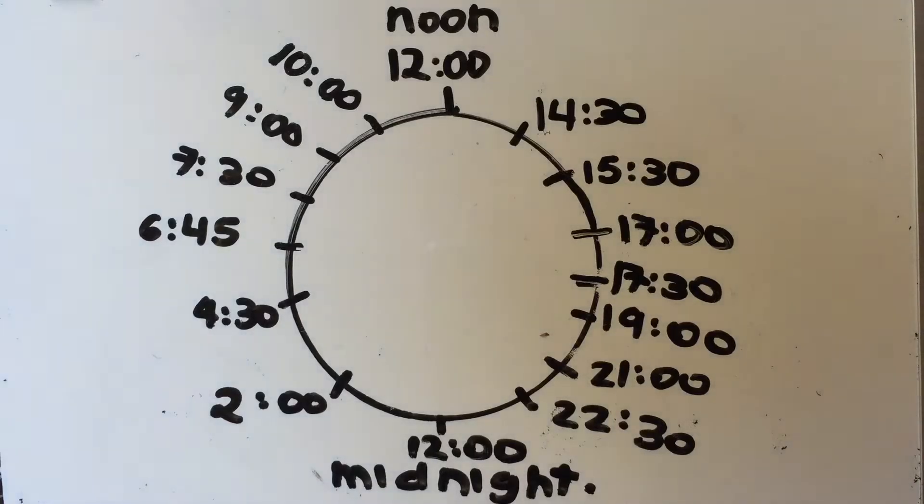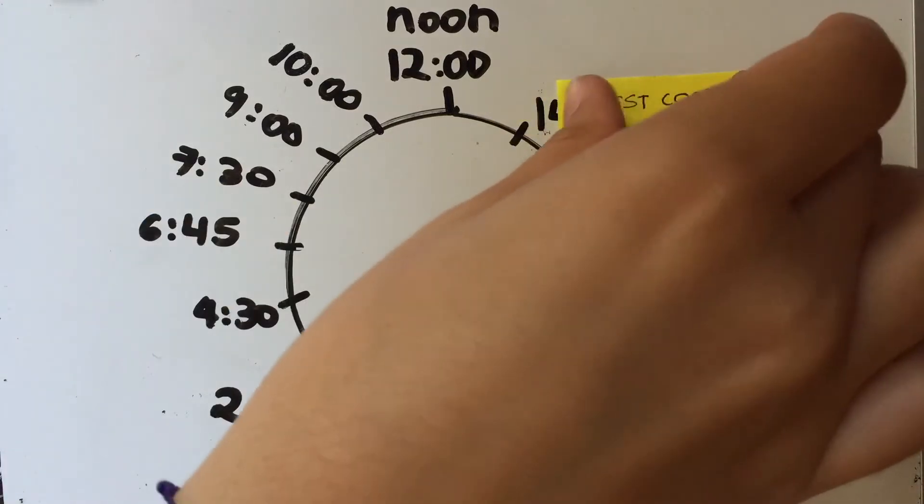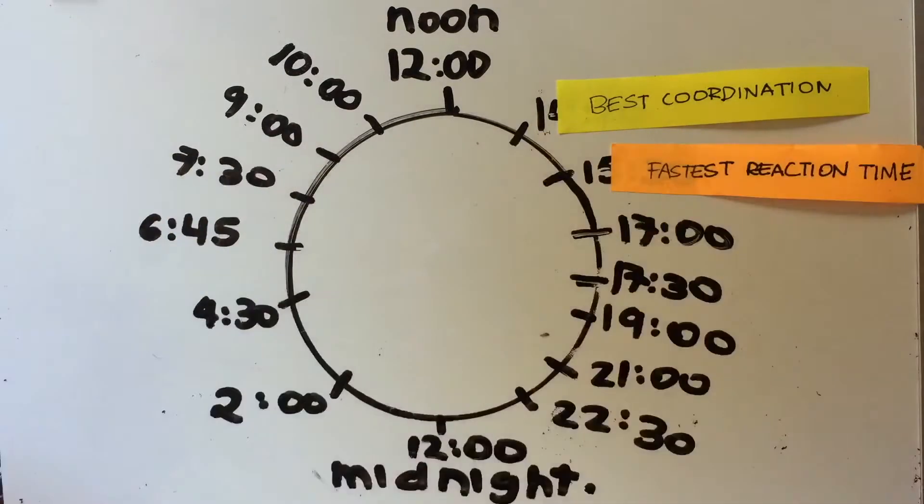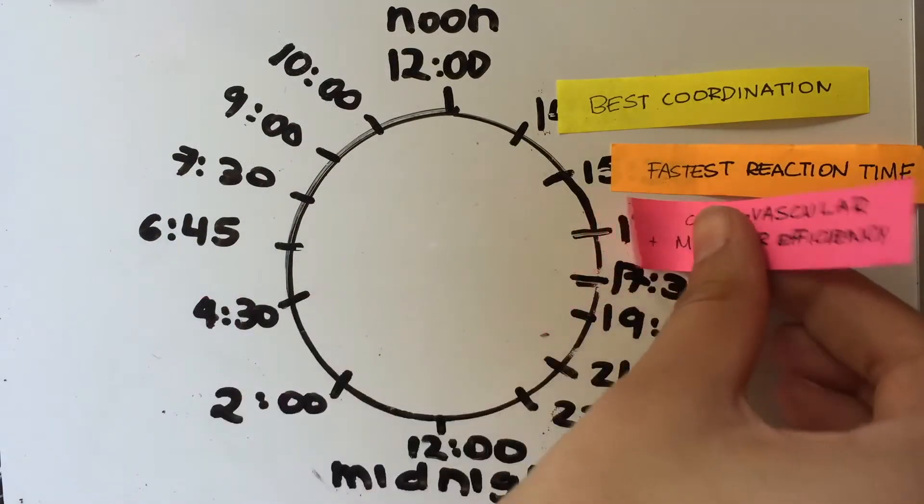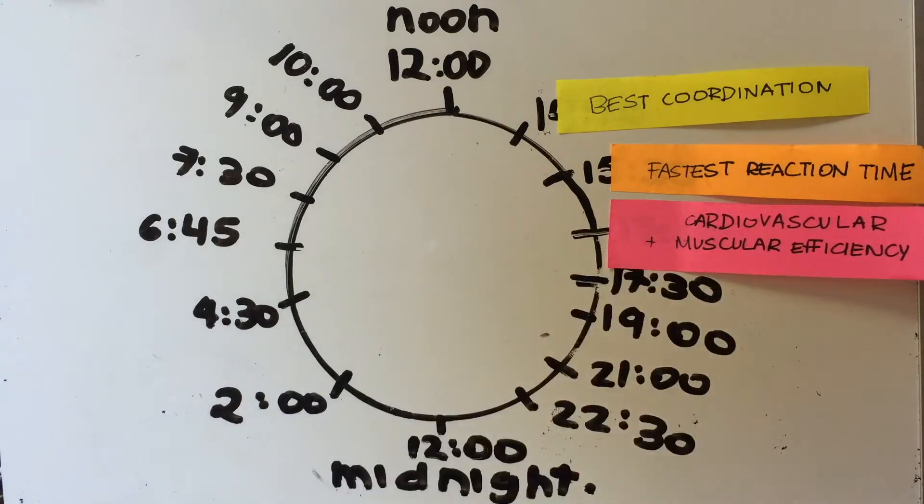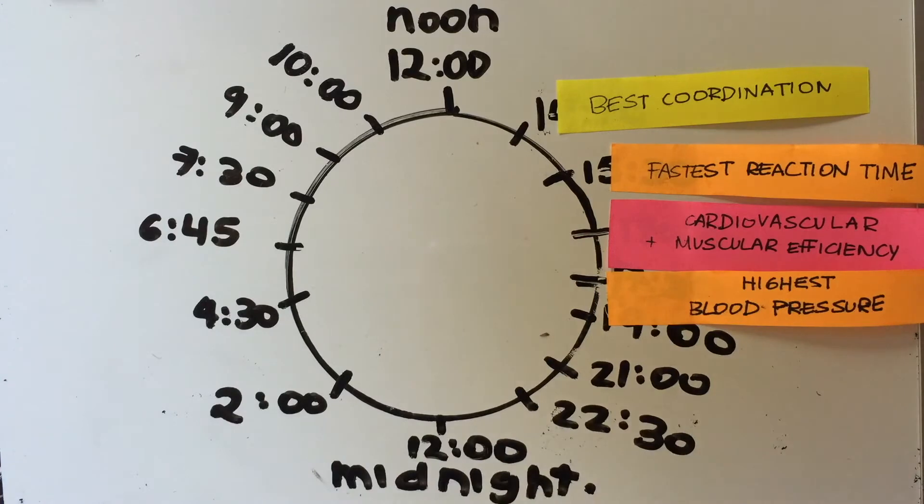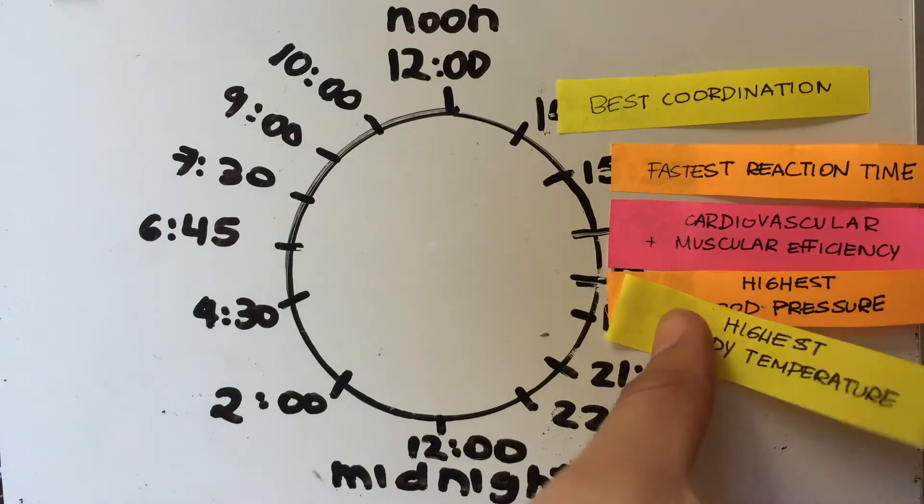It is known that at different times of the day and night our bodies perform specific functions more efficiently. In a 24-hour period, these are the most important stages the body goes through: best coordination at 2:30, fastest reaction time at 3:30, greatest cardiovascular efficiency and muscle strength at 5, highest blood pressure at 6:30, highest body temperature at 7.